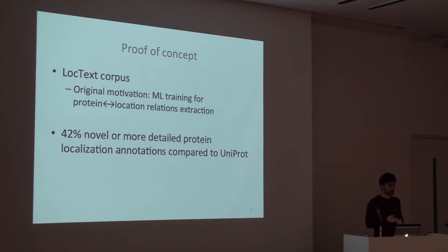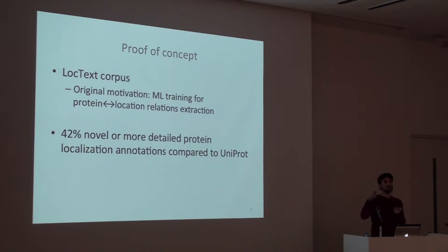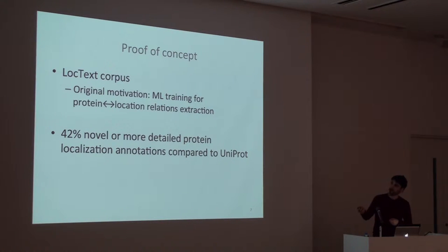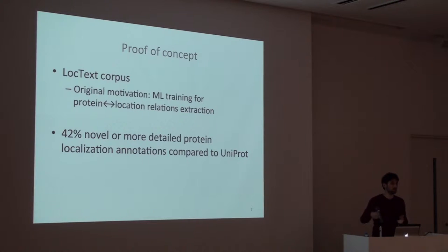As a proof of concept, we developed the LocText corpus. As Karin Bespor said before, we did this originally just for training machine learning methods to extract from documents the relations of proteins to localizations in the cell. When we finally did some annotations, we found that 42% of those protein location annotations were novel or more detailed compared to those existing in UniProt.